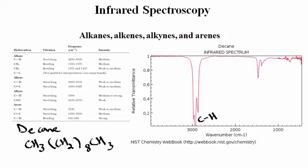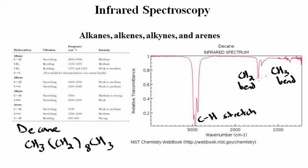The peak is strong because decane has a large number of CH bonds and no other functional groups. The other prominent peaks correspond to methylene bending at 1,465 wave numbers and methyl bending at 1,380 wave numbers. For the rest of this video, I'll show one example per functional group type. There will be a separate video where we delve into solving problems — given a spectrum and interpreting it to identify the actual molecules.